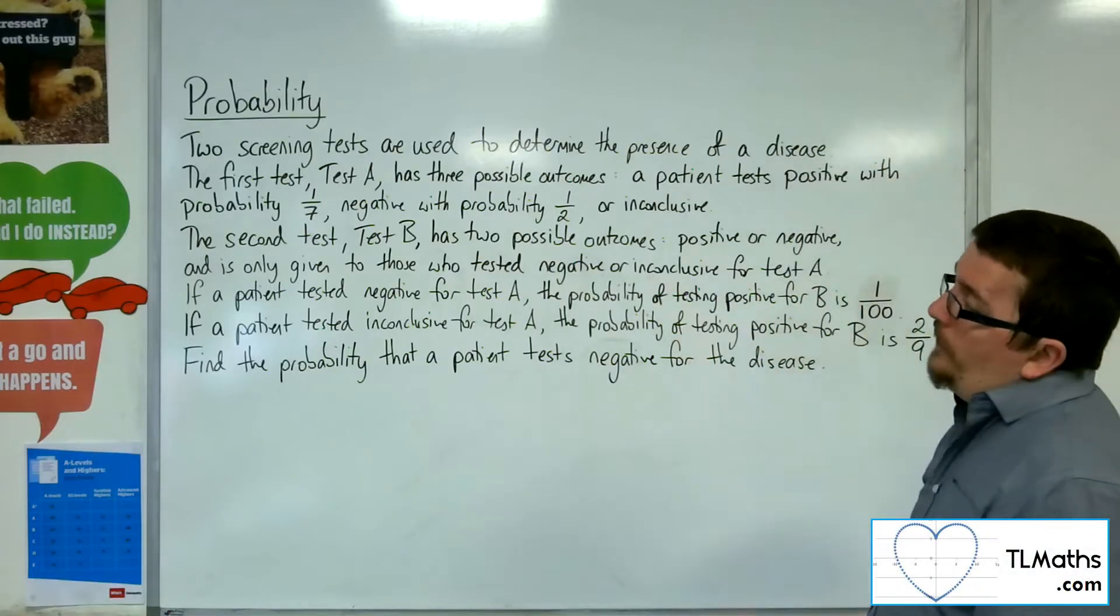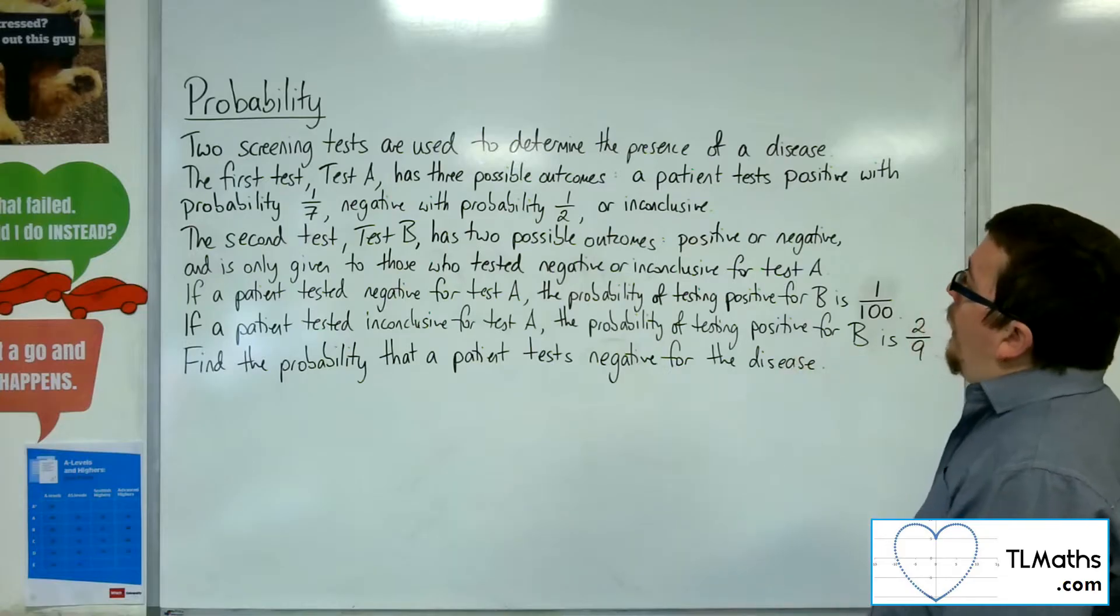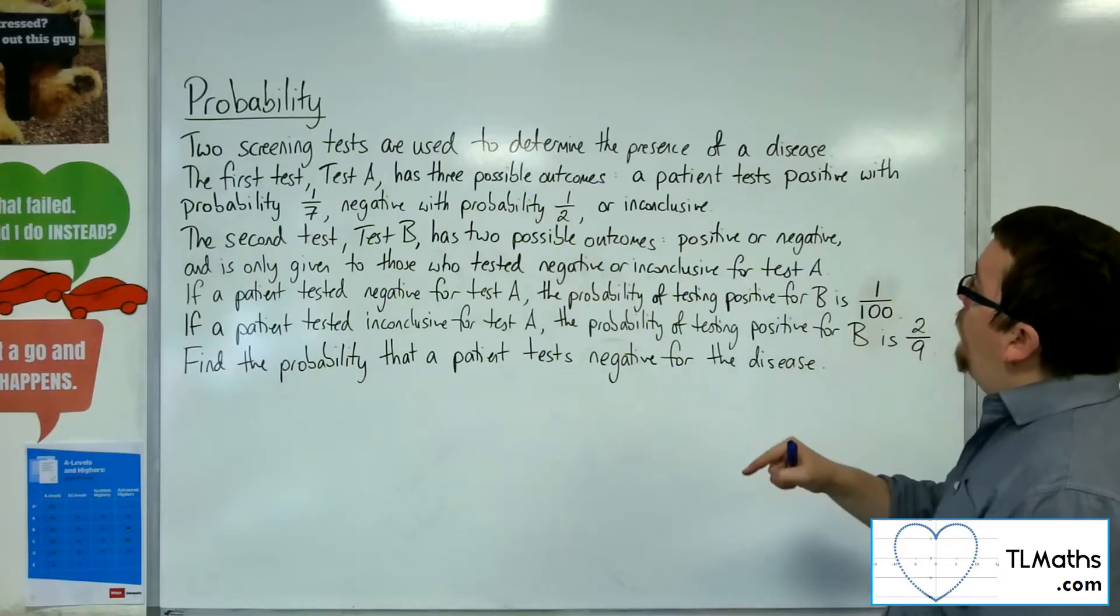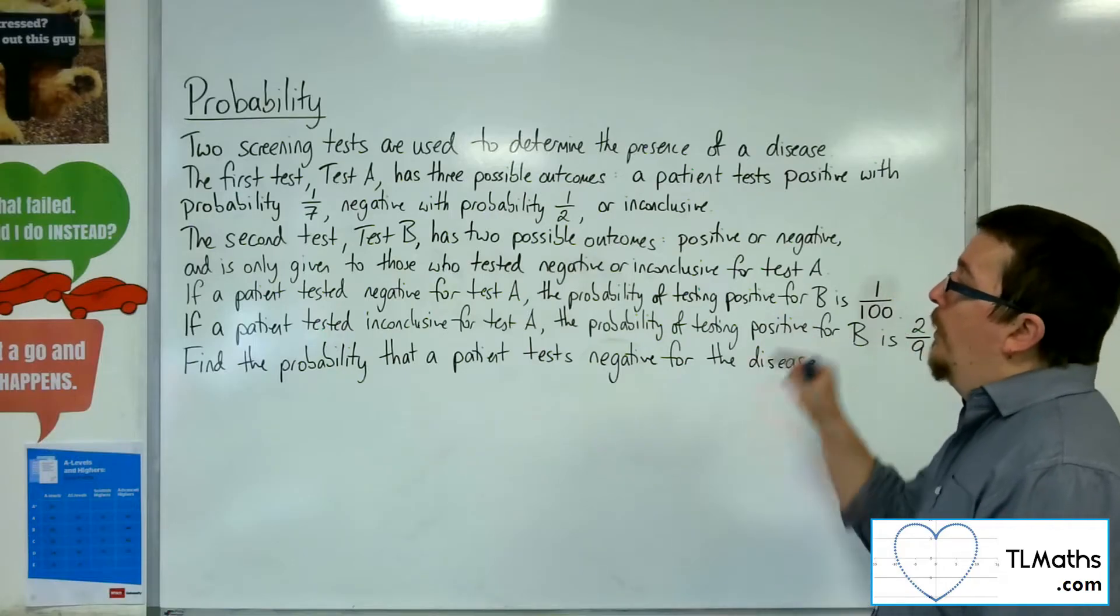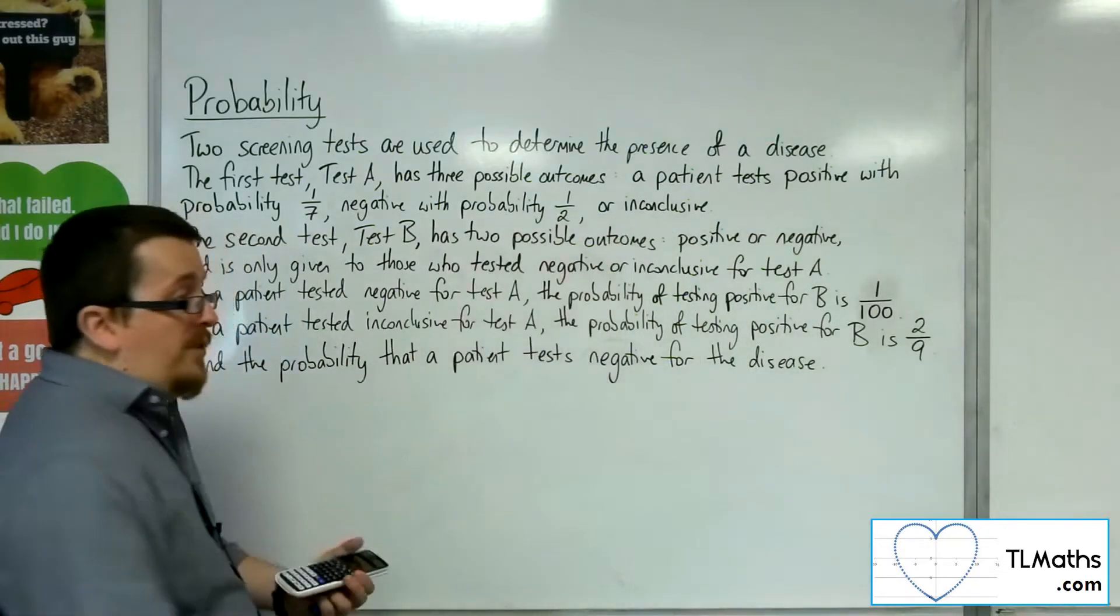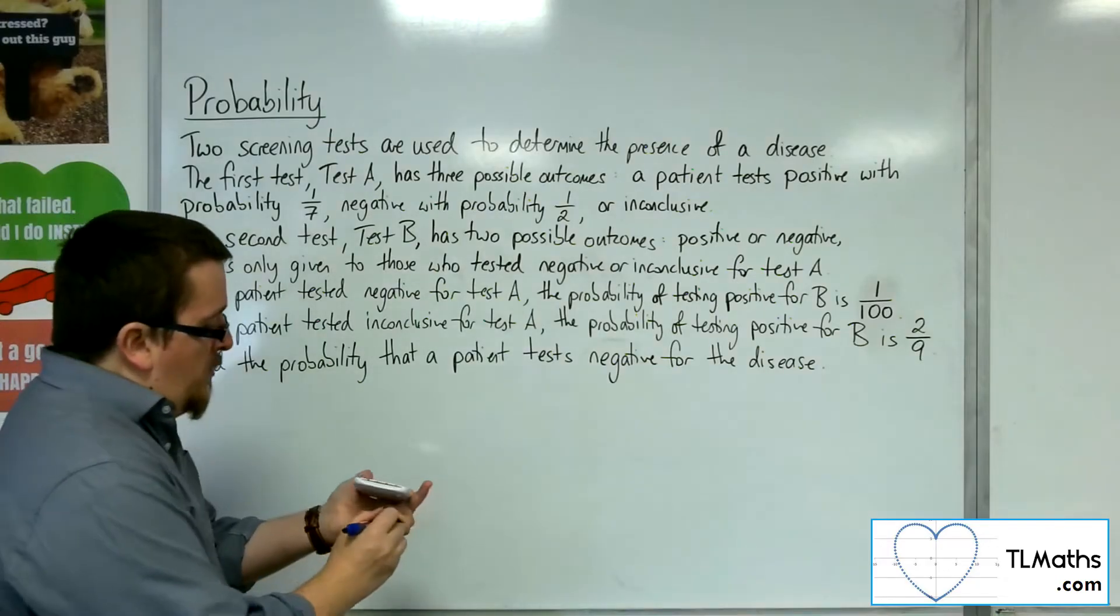The first test, test A, has three possible outcomes. A patient either tests positive with probability one-seventh, negative with probability one-half, or inconclusive. So what we're going to do is we're going to build up this tree as we go.